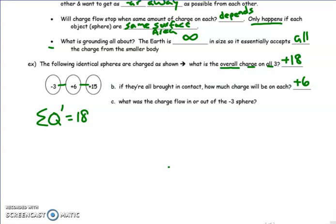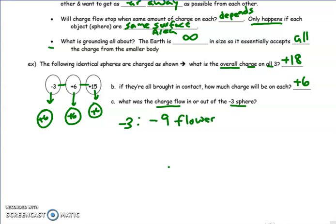So now let's talk about what was the actual charge flow for the negative three sphere. What was happening? So what I'm going to draw is three spheres again, and when these touched, this three went from that state to a positive six state. You could argue charge just flowed through this, but then didn't change anything, so it stayed six, and then this went from fifteen to positive six. So the negative three, how did it go from that? Well, it became more positive. How does one become more positive? Not by gaining positive, because negative nine flowed out of it.